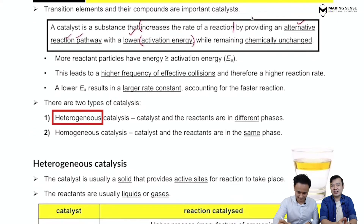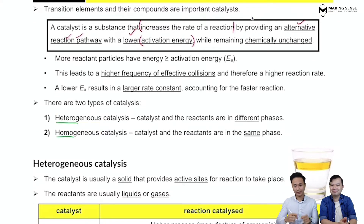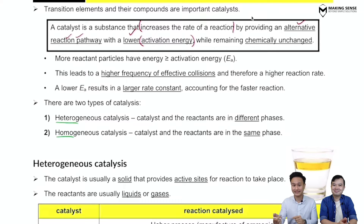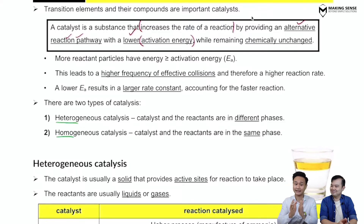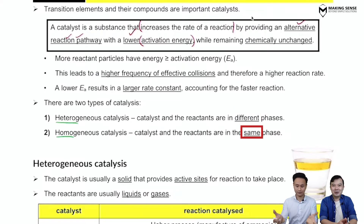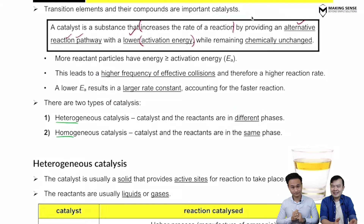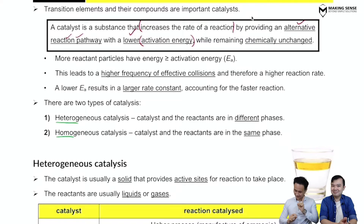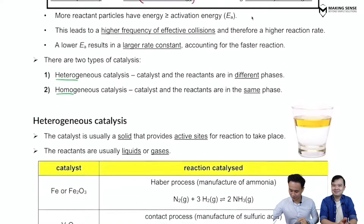There are two different types of catalysts: heterogeneous and homogeneous. 'Hetero' means different, 'homo' means same. So heterogeneous means the reactants and the catalyst are in a different phase, while for homogeneous they are in the same phase. Note: the words 'phase' and 'state' cannot be used interchangeably — we have to be very careful.